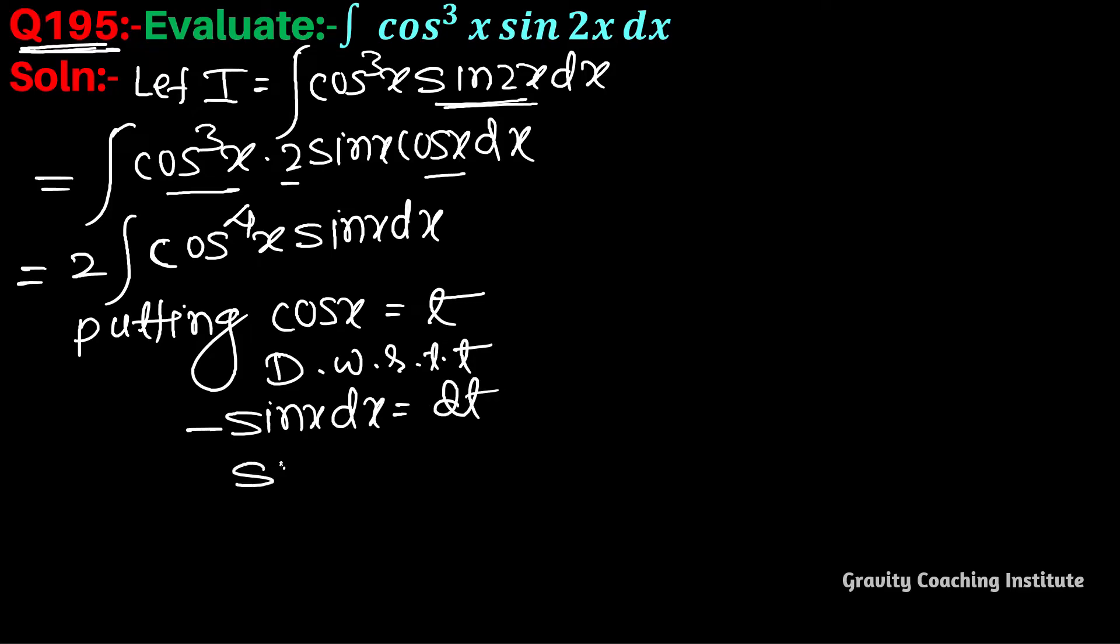Therefore, I equal to integration of cos⁴x and sinx dx. Substituting the value minus dt, this becomes minus 2 integration of t⁴ dt.